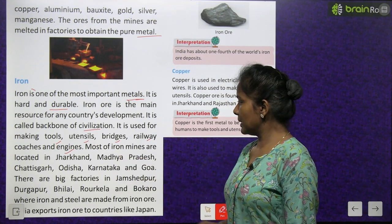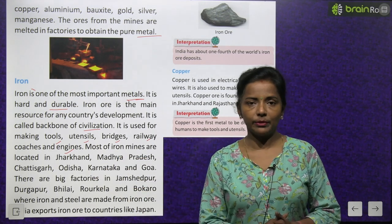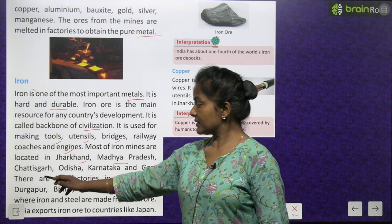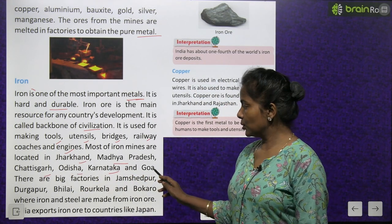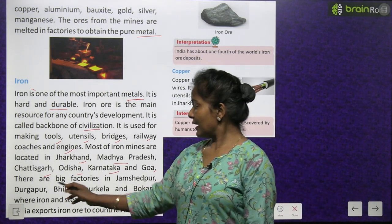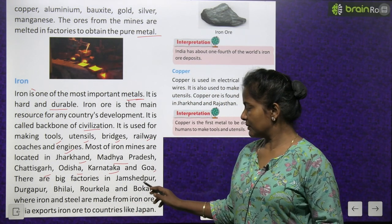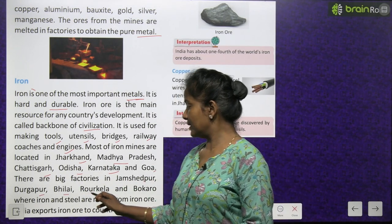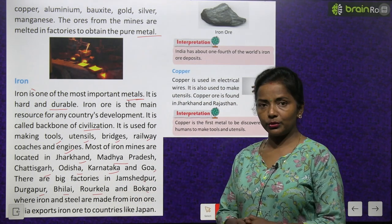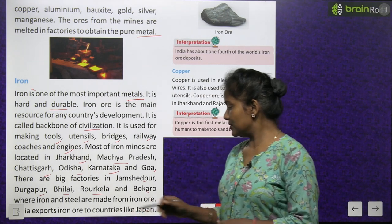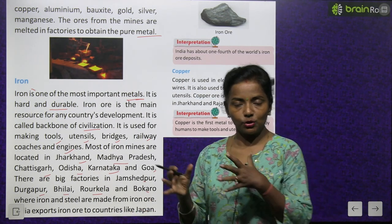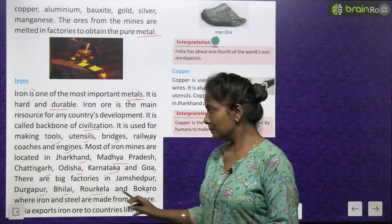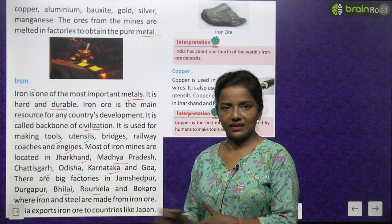Most of the iron mines are located in Jharkhand, Madhya Pradesh, Chhattisgarh, Odisha, Karnataka and Goa. There are big factories in Jamshedpur, Durgapur, Bhilai, Rourkela and Bokaro where iron and steel are made from iron ore.